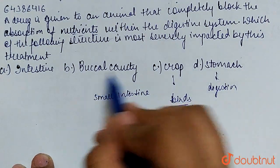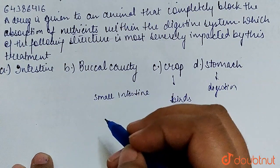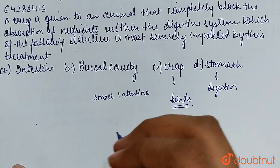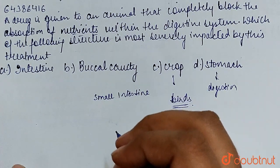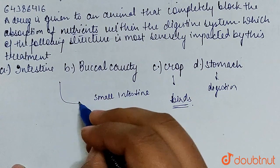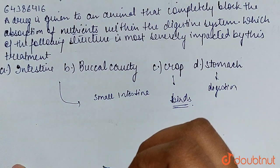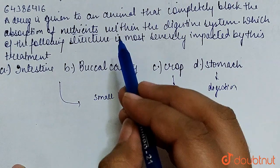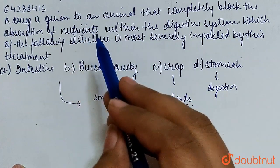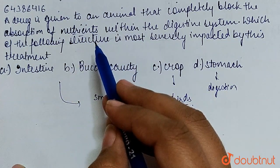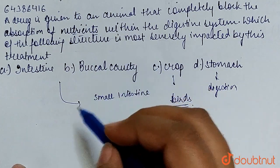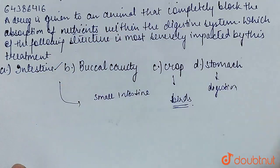In the buccal cavity, food is masticated and mixed with saliva. Then in the intestine, maximum absorption is in the small intestine. Since the drug is blocking the absorption, that means the structure most severely impacted is option A — the intestine.